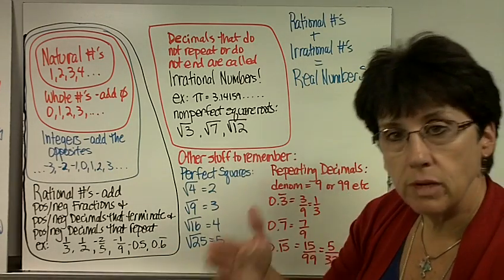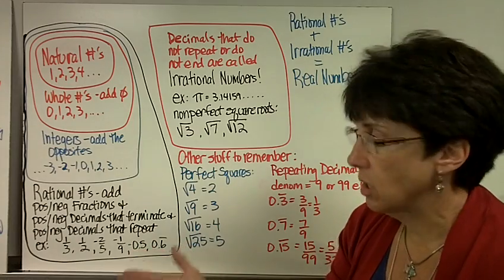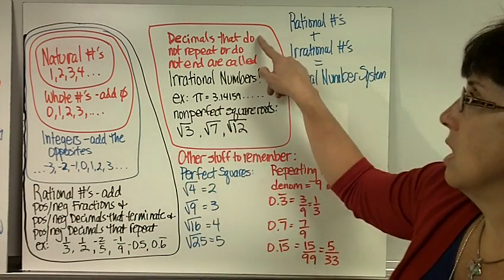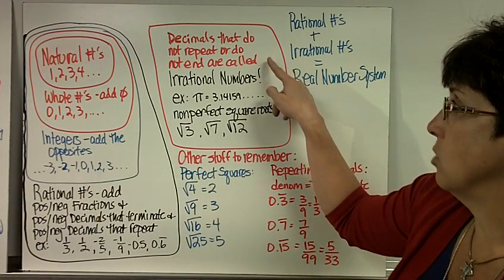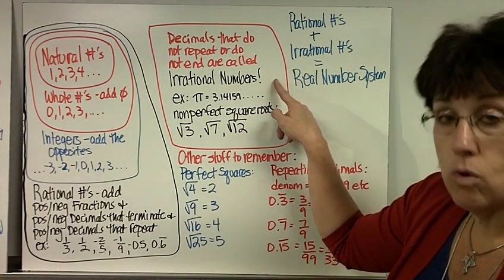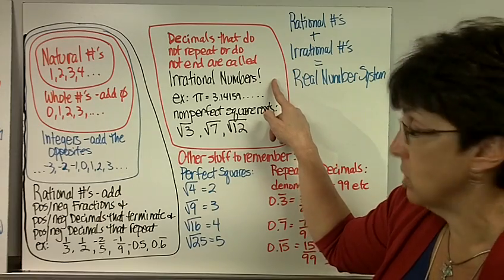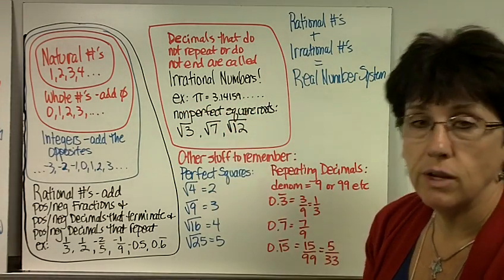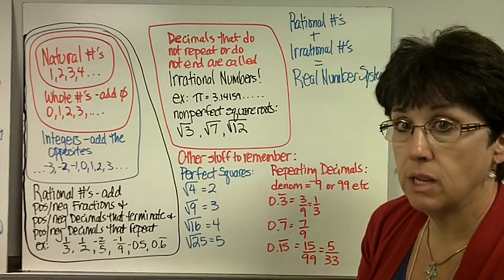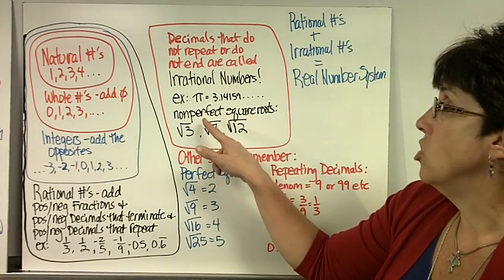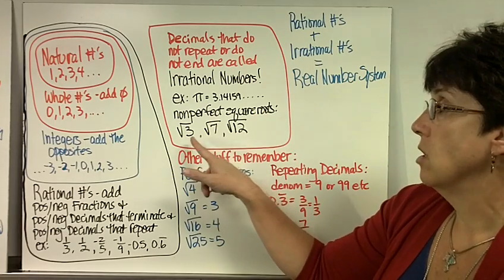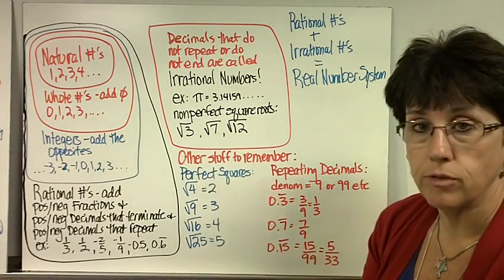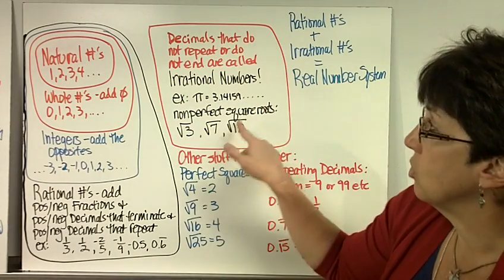All decimals that terminate — which means end if you do it on the calculator — or repeat are rational numbers. The only other decimals are ones that do not repeat or do not end. Those are called irrational numbers. For example, pi: 3.14159, it goes forever and they haven't been able to find a repeat. Or non-perfect square roots, such as the square root of 3, the square root of 7, the square root of 12 — those are your irrational numbers.